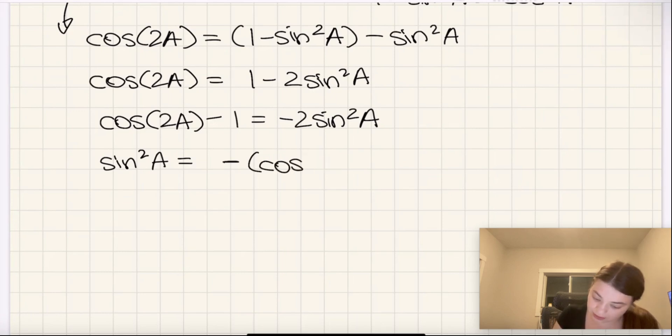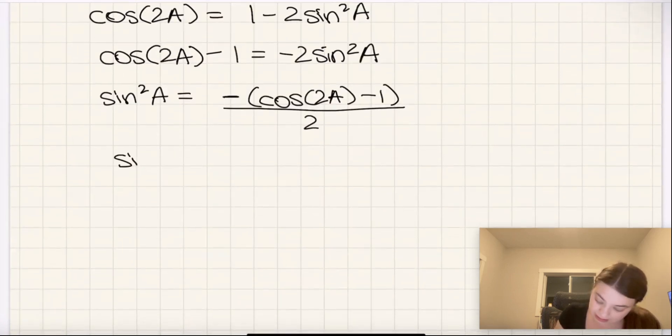Actually, let me correct that. I meant cos 2A minus 1, all over 2. That simplifies to sine squared A equals 1 minus cos 2A, all over 2.